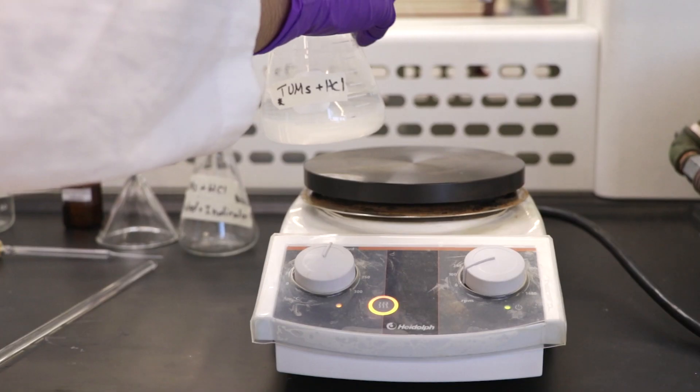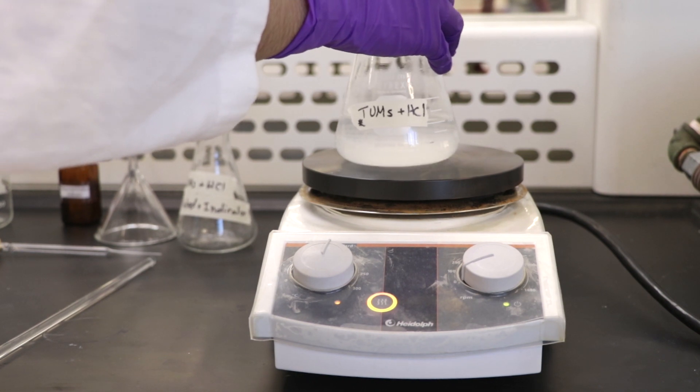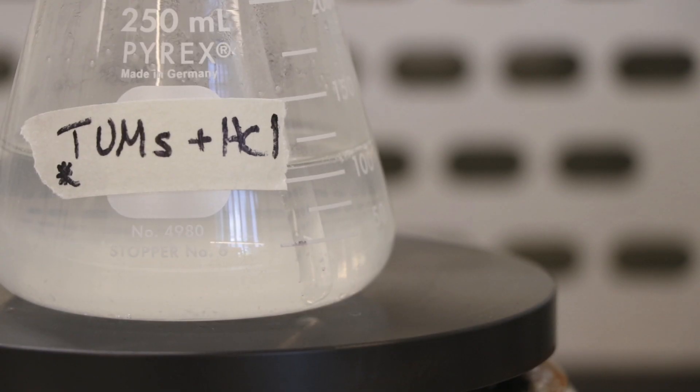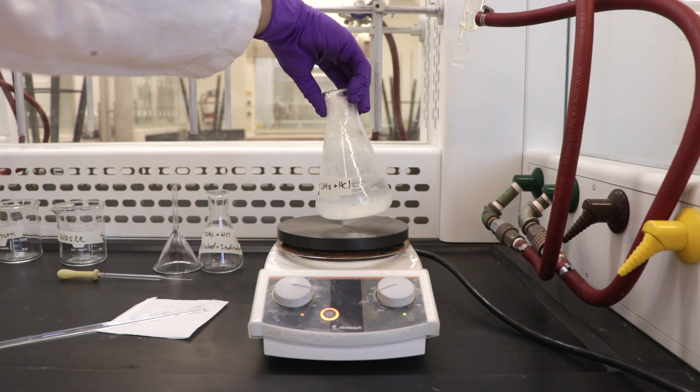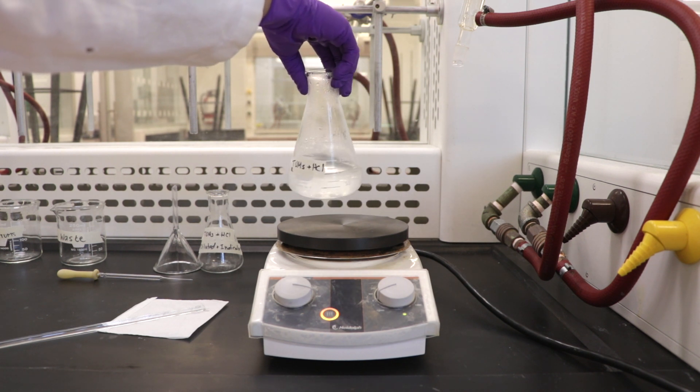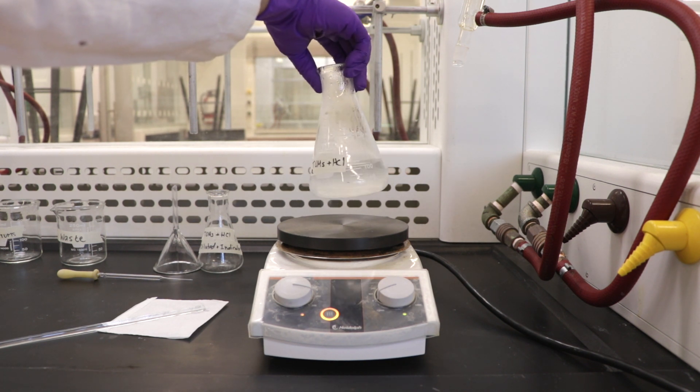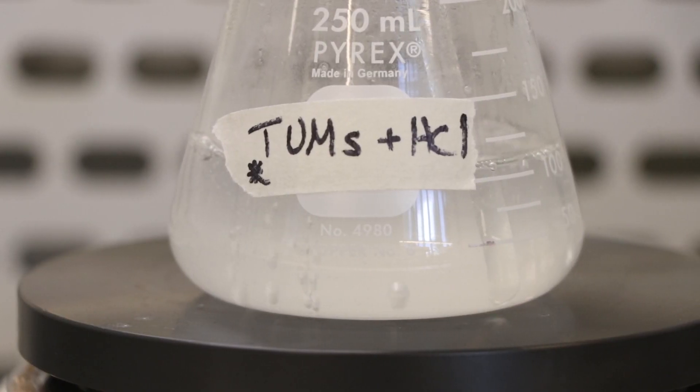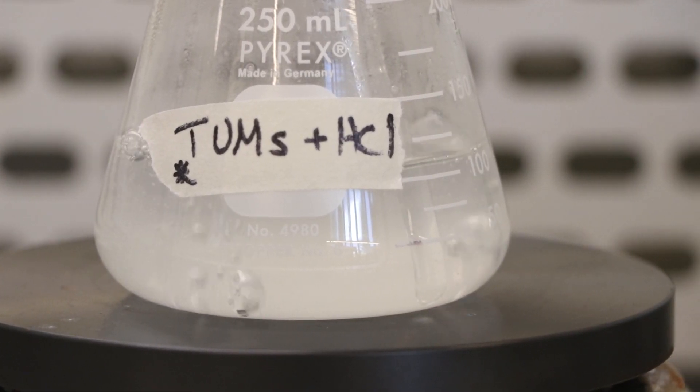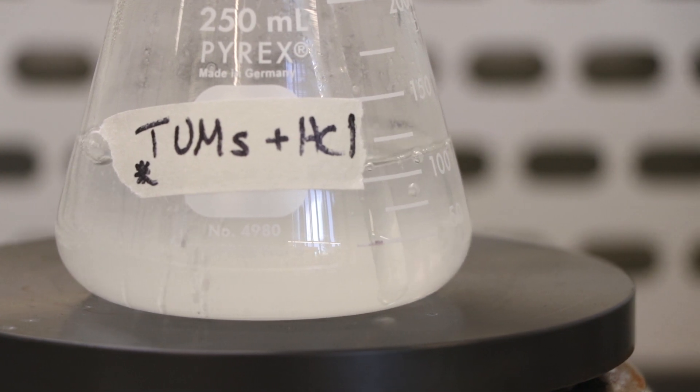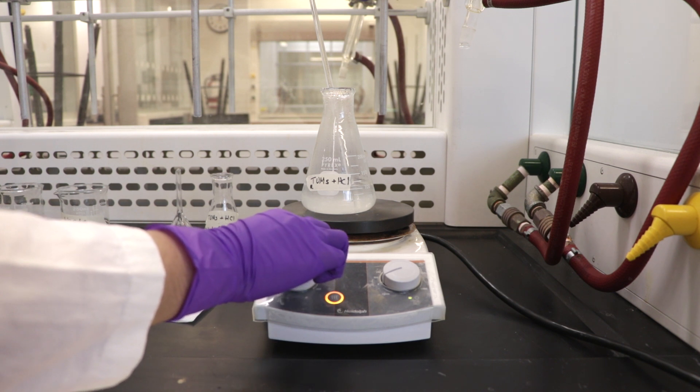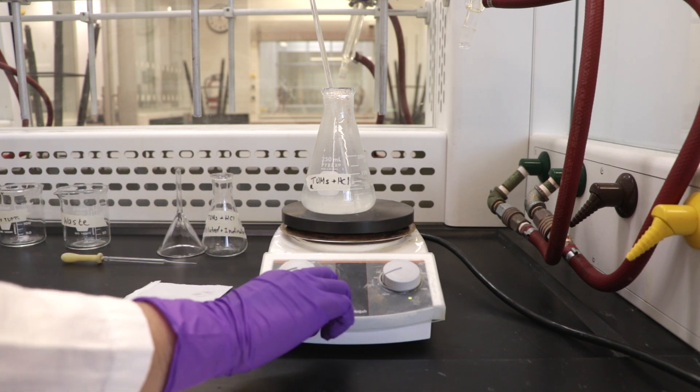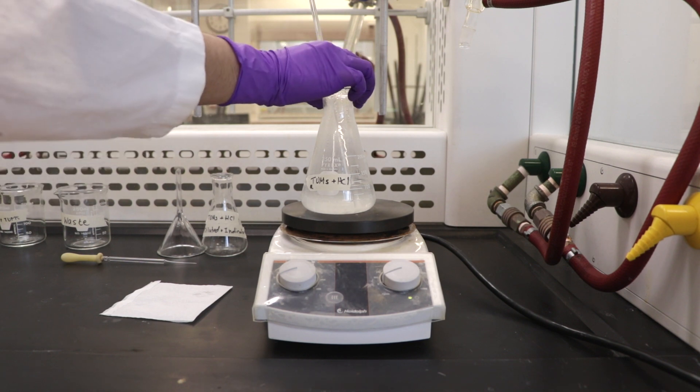Place the flask on the hot plate and heat to a gentle boil for five minutes to remove the dissolved carbon dioxide. Dissolve the tablet as much as you can. Try swirling the flask or breaking the tablet with a stirring rod. The tablet has insoluble binding material, so you may not be able to get everything to completely dissolve. If any film forms along the side of the flask, wash it down with a disposable pipette or a wash bottle. After five minutes of boiling, set the flask on the bench to cool.